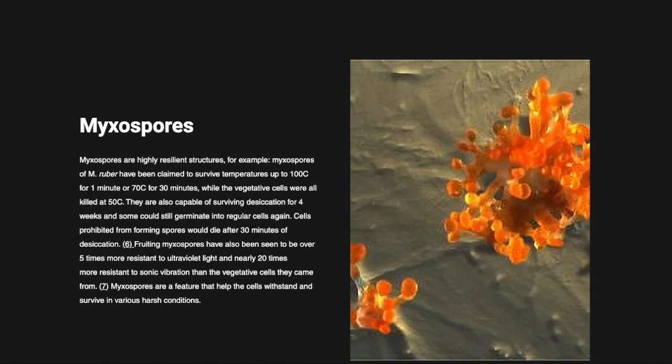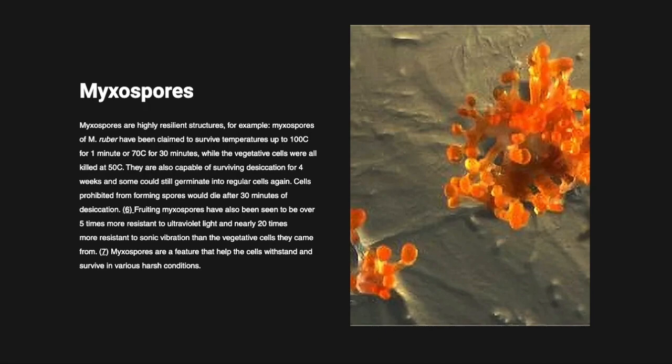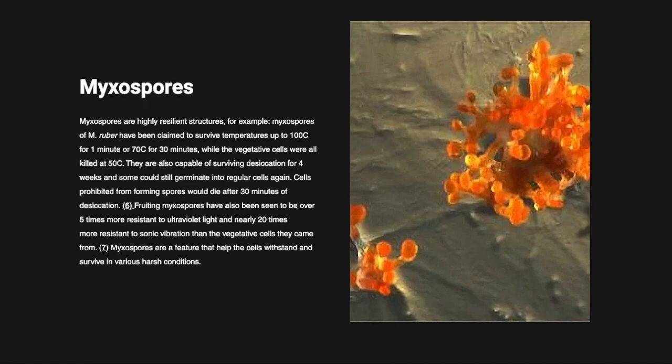Myxospores have been claimed to survive temperatures of up to 100 degrees Celsius for up to 1 minute, and 70 degrees Celsius for up to 30 minutes. However, the regular fruiting cells died at 50 degrees Celsius.